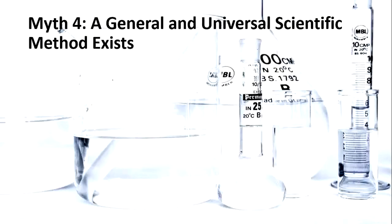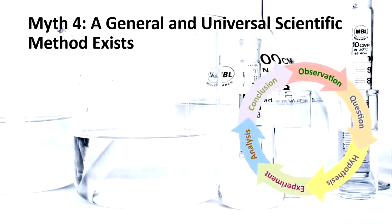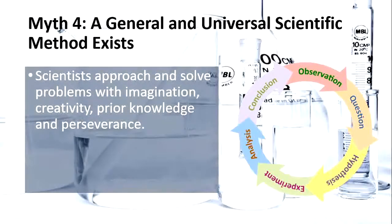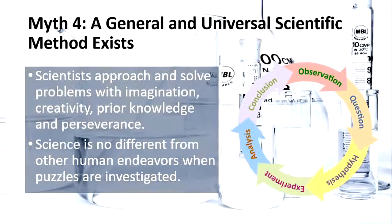The next myth is that a general and universal scientific method exists. If you see science textbooks, you will see steps like observation, question, hypothesis, experiment, analysis, conclusion. Science students start to believe that everything studied in science follows these particular steps. But students rarely get an opportunity to understand that scientists approach and solve problems with imagination, creativity, prior knowledge, and perseverance. Dear teachers, you should clarify to your learners that science is no different from other human endeavors when puzzles are investigated.